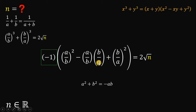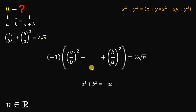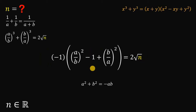For the middle term, let's focus on a over b multiplied by b over a. We can cancel the a and the b factors in numerator and denominator, giving us negative 1. So we now have the expression negative 1 times (a over b squared minus 1 plus b over a quantity squared), still equivalent to 2 times the square root of n.